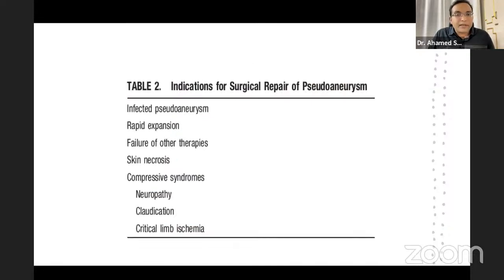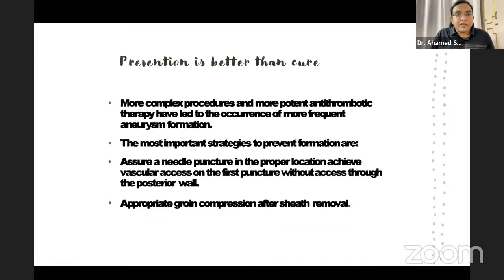Indications for surgical repair include: infected pseudoaneurysm, rapid expansion, failure of other therapies, skin necrosis, severe compressive syndromes especially critical limb ischemia. More complex procedures and more potent antithrombotic therapy have led to more frequent aneurysm formation. The most important preventive strategies are proper needle placement and appropriate groin compression after sheath removal. An angioseal closure device should be considered in patients receiving a large sheath who have had a complicated procedure.